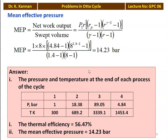Answers to the problem: Pressures — P1 equals 1 bar, P2 equals 18.38 bar, P3 equals 89.05 bar, P4 equals 4.84 bar. Temperatures — T1 equals 300 K, T2 equals 689.2 K, T3 equals 3339.1 K, T4 equals 1453.4 K. Thermal efficiency is 56.47 percent and mean effective pressure is 14.23 bar.